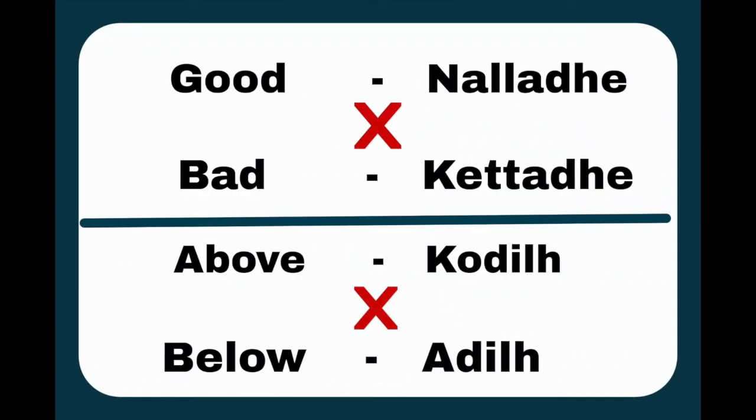Good — Nulladu. Bad — Kettadu. Above — Ebo / Kodilu. Below — Adilu.